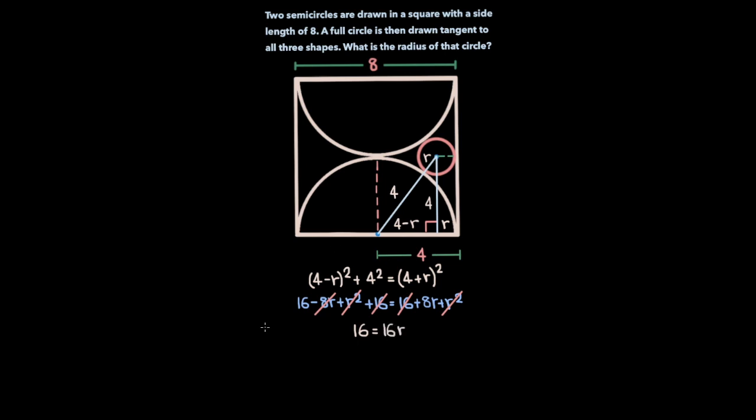And now if we divide by 16 on both sides, we get that r, the radius of the pink circle, is equal to 1. And that's all there is to this problem.